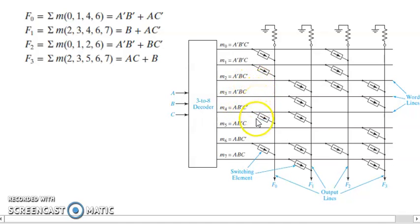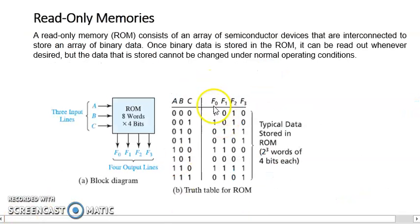Place elements for the required minterms and leave unused ones open. This is how we realize a ROM circuit. For different functions, connect the appropriate minterms. Place switching elements between decoder outputs and final outputs. This is the truth table of the ROM. The ROM content is usually specified in the truth table.